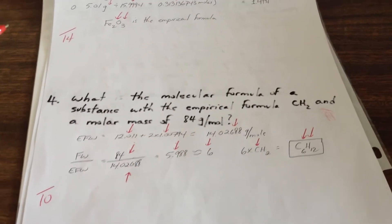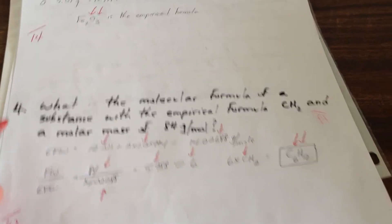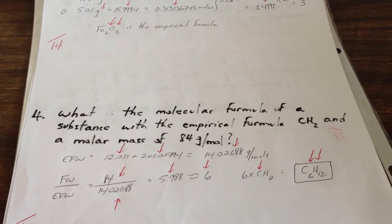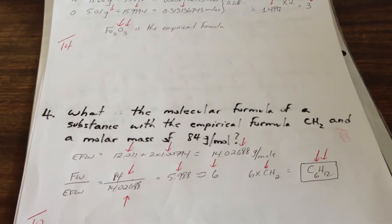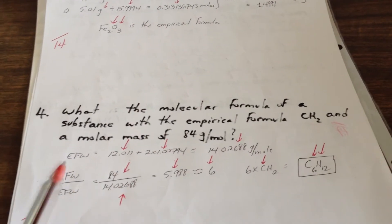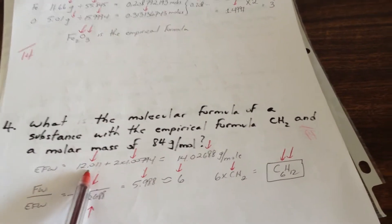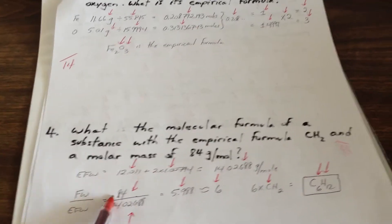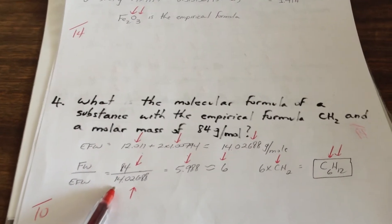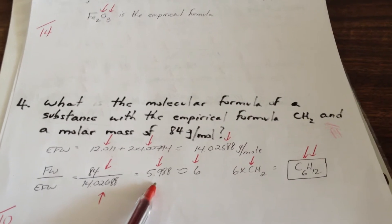Fourth question asks, what is the molecular formula of a substance with the empirical formula CH2 and a molar mass of 84 grams per mole? So here's the empirical formula weight. 12 plus 2 times hydrogen gives you 14. The formula weight is 84, we're told. Here's the empirical formula weight. So when we make a ratio with it, we get 5.988,